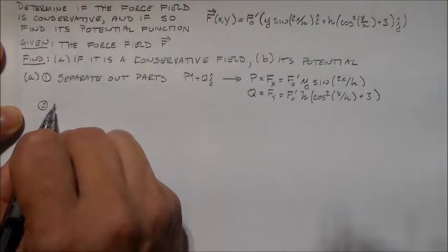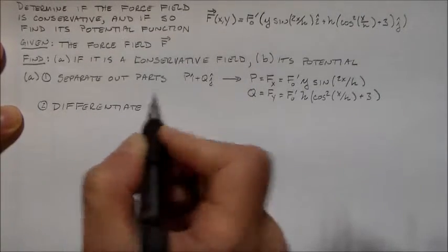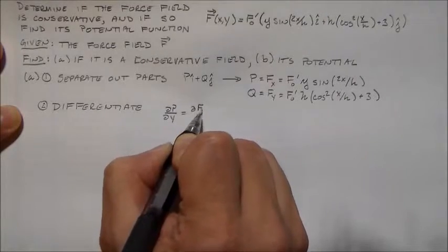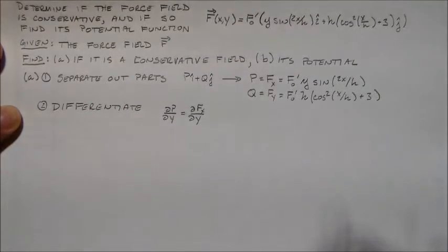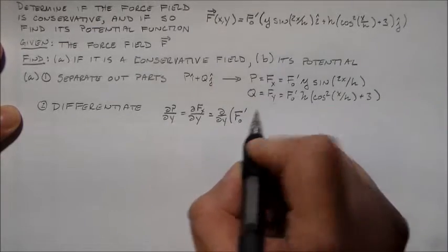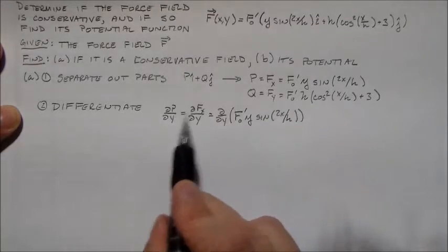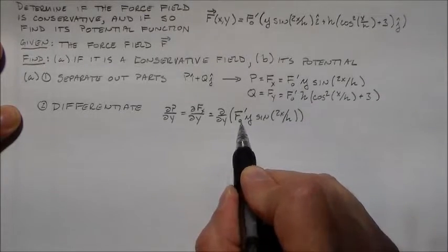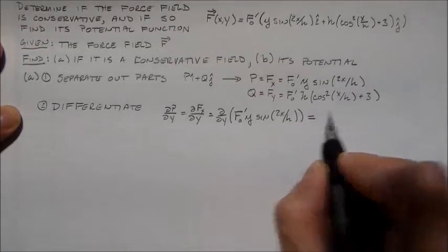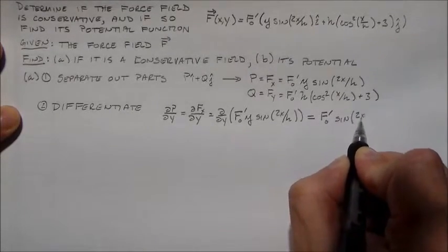Two, what do we want to do? We want to differentiate. So again, right now we're trying to determine if it's a conservative field, and you do that by taking the derivatives. So dP/dy, which is equal to the derivative of the x component with respect to the y variable, is equal to d/dy f naught prime y sine 2x over h. Up to here, that's general. Now, this is specific. F naught, constant with respect to y, y is not, and sine 2x over h is a constant with respect to y. So really, I have just dy/dy, which is 1. So this is fairly simple. f naught prime sine of 2x over h.